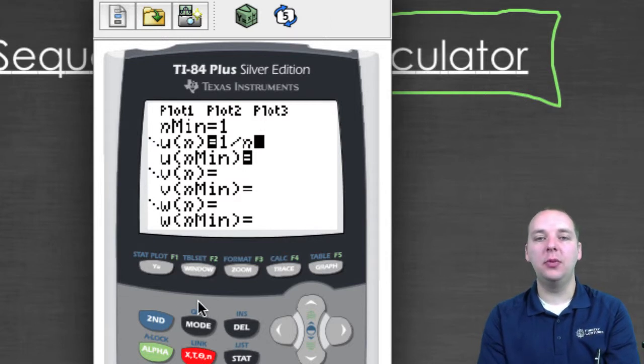And you use the same variable button, the one below mode. Notice it says x, t, theta, and n. That's function mode, parametric mode, polar mode, and sequence mode. If your function is a sequence, you'd want n's, not x's.